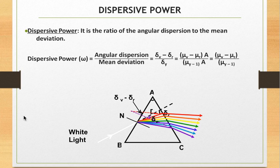Another important term for a prism is dispersive power. The dispersive power is the ratio of angular dispersion, that is delta v minus delta r, to the mean deviation, that is deviation produced for yellow color. So dispersive power, noted by omega, is given by delta v minus delta r over delta y, or mu v minus mu r over mu y minus 1. This is how we define dispersive power. Remember the dispersive power should be high for a prism if you want to study the spectrum.